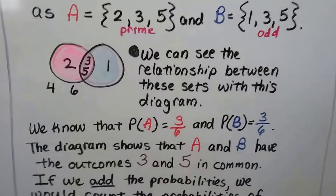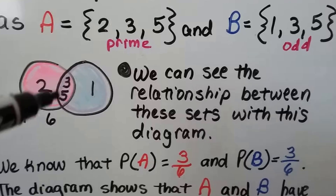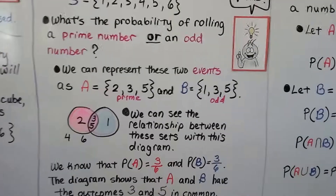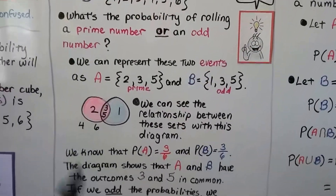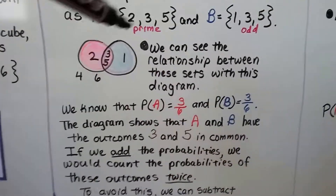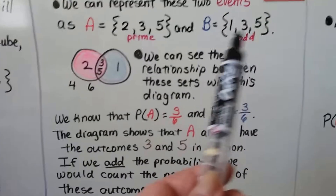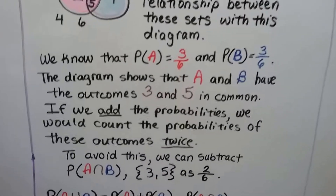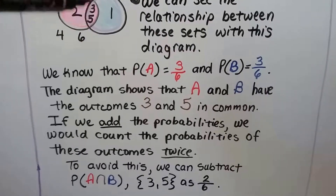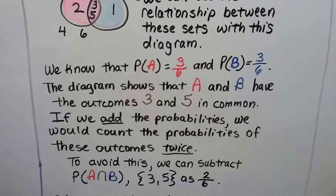We can see the relationship between these sets with a diagram. A has 2, 3, and 5, and B has 1, 3, and 5. The 4 and the 6 aren't in either set. The probability of A is 3/6 — three numbers out of a possible 6. The probability of B is also 3/6. The diagram shows that A and B have outcomes 3 and 5 in common. If we add the probabilities, we would count those outcomes twice — we don't want to do that.